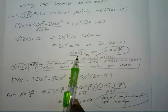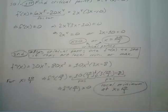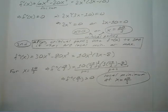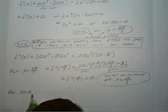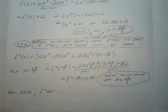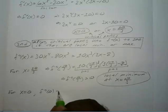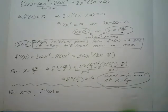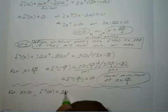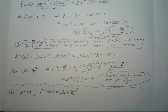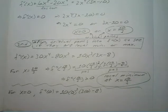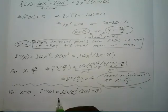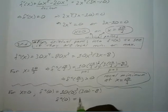Now we do the same thing for x equals 0. F double prime at 0 equals 10 times 0 to the 3rd power times 3 times 0 minus 8. This is just 0 times whatever — it doesn't matter, it's still going to be 0. So your second derivative at 0 equals 0.